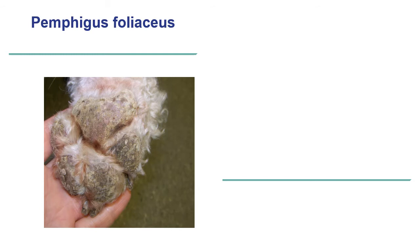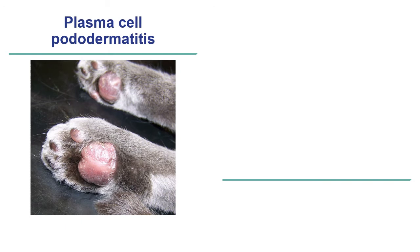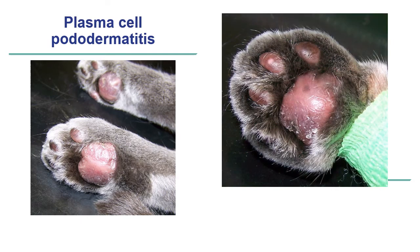Here we have a classic example of pemphigus foliaceus in a middle-aged standard Poodle, where the lesions are characterised by multiple crusting eruptions affecting the footpads. The haired skin was also affected, as pemphigus is a pustular disease involving both haired and non-haired skin. This is a less common but still possible immunomediated disease of the footpads — plasma cell pododermatitis in feline patients — characterised by oedema of the footpads, often with fine scales and in some cases ulceration. Often multiple footpads are involved, most often the tarsal, metacarpal, and metatarsal, though digital footpads can also be affected.